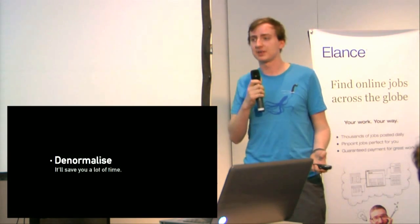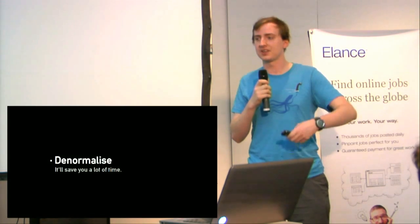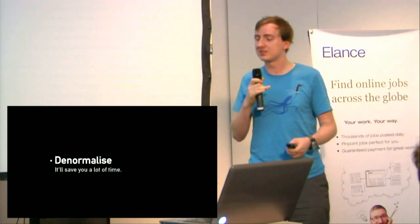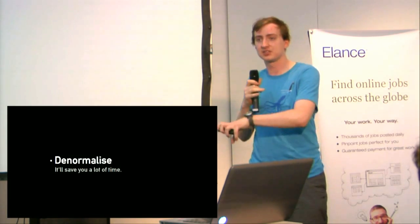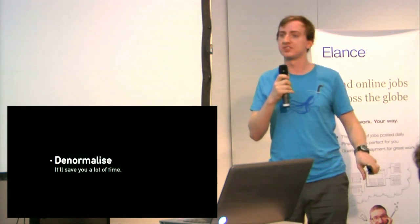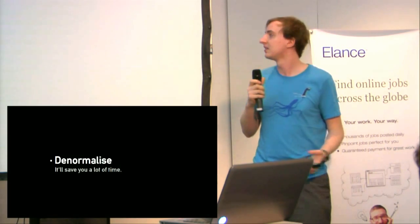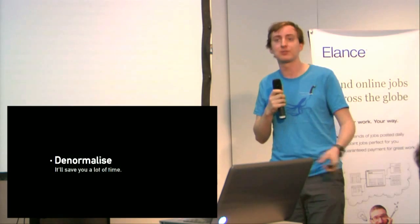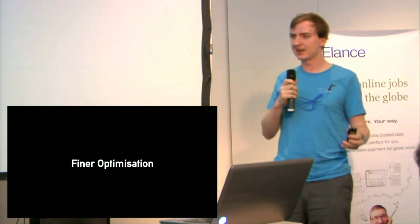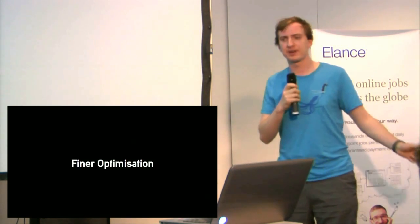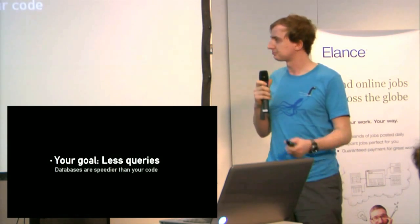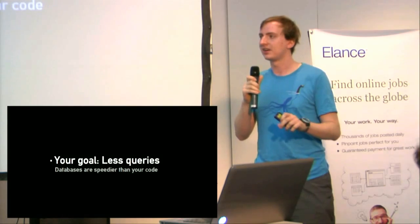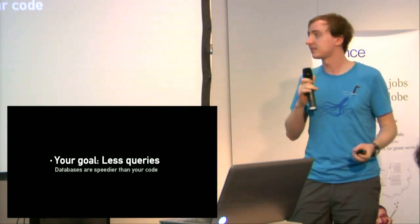Another example: at Lanyard we have conferences and sessions. We can denormalize things like session counts onto the conference, so we can tell without even a query to Redis how many sessions each conference has, and show that efficiently without any extra lookups. That's a very broad spectrum optimization, but your main goal is to have fewer queries. This isn't always true, but it's a very good basic idea.